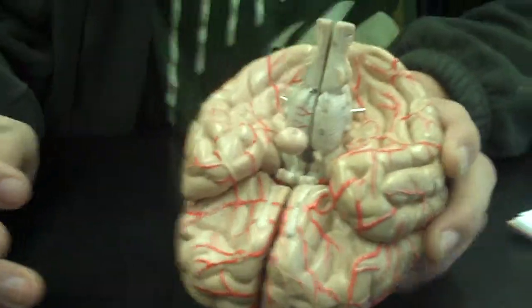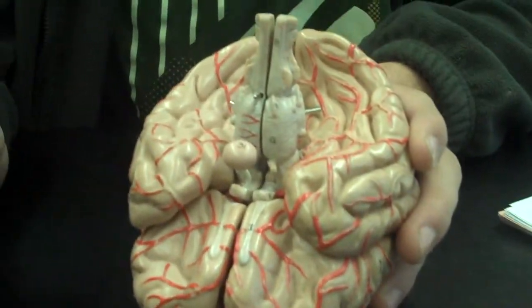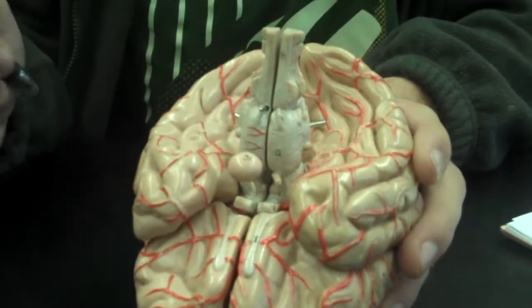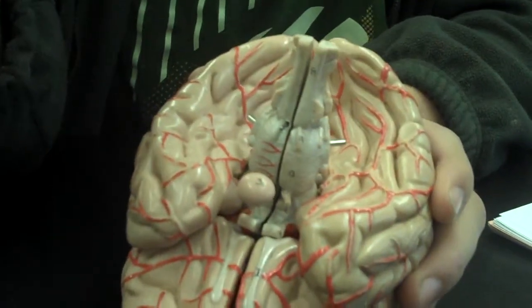Alright, now we're getting into the endocrine system. A couple of things in the endocrine system. The endocrine system is located all over the body. It's just small glands located all over the place.